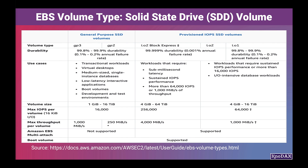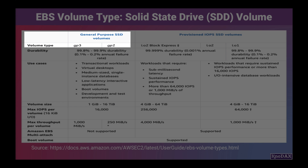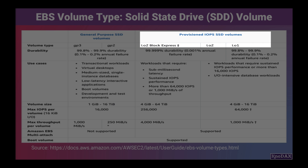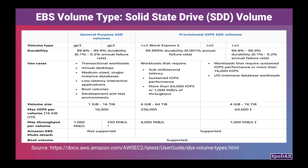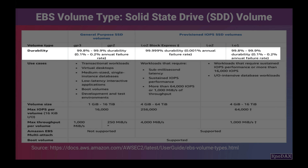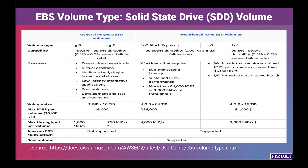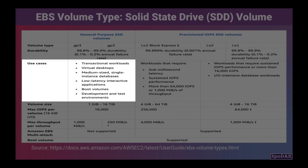This screenshot and discussion should provide a good general understanding of which use case one type of SSD is better than the other. As you can notice from the screenshot, GP2 and GP3 are general-purpose SSD volumes, and IO1 and IO2 are provisioned IOPS SSD volumes. Provisioned IOPS SSD volumes have much better durability. Use cases wise, general-purpose SSDs are good for transactional workloads, medium-sized single-instance databases, low-latency interactive applications, boot volumes, and development and test environments.